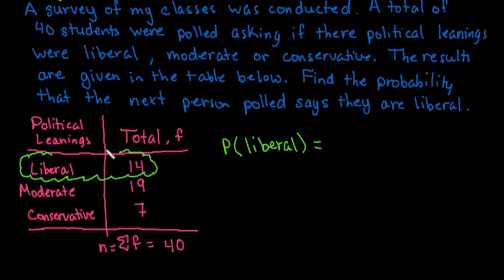So if I was looking for moderate, I would look at this one. So the total frequency of students that responded that they leaned to the left or that they tended to be more liberal was 14, and then we put it over the total number that were sampled. So I would put it over 40.